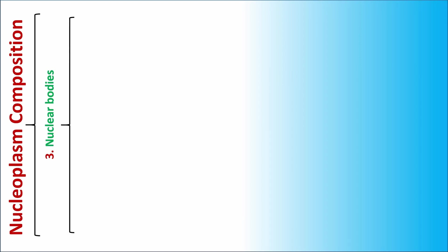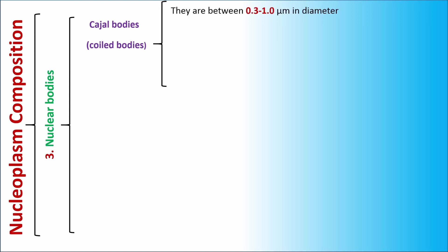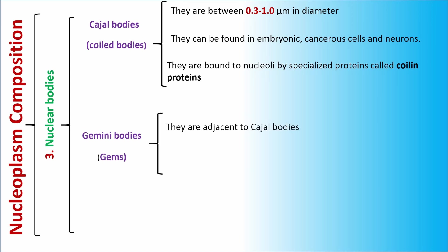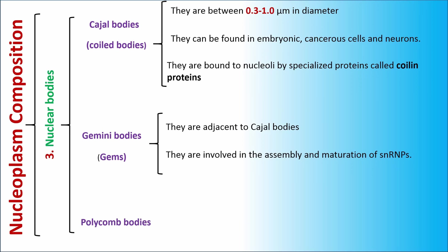The third part of nucleoplasm composition is nuclear bodies, which can be divided into three groups. The first group is Cajal bodies, or coil bodies, which are 0.3 to 1 micrometers in diameter and can be found in embryonic, cancerous cells, and neurons. They are bound to nuclei by a specialized protein called coilin. The second group is Gemini bodies, or GEMs, which are adjacent to Cajal bodies and are involved in the assembly and maturation of snRNPs. The third group is Polycomb bodies.